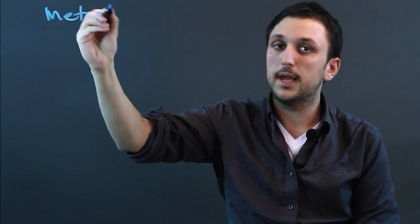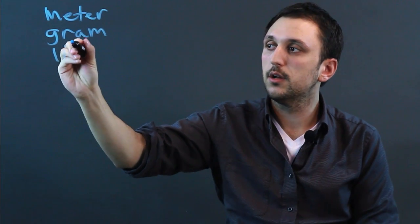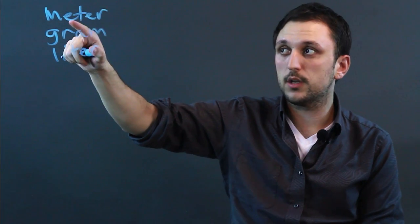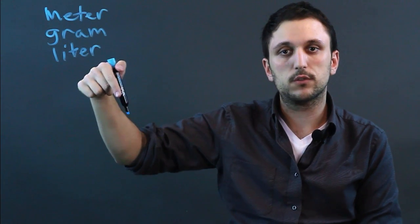Now SI is the International System of Measurement, also known as the metric system, and all the prefixes are based on multiples of 10. So when you have a meter, or a gram, or a liter, these are your roots, these are your basic unit of distance, mass, and volume, and we're going to add prefixes to them.